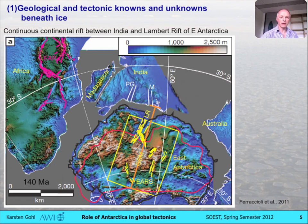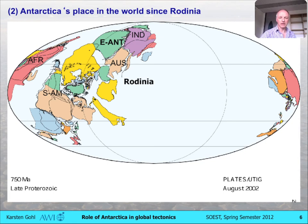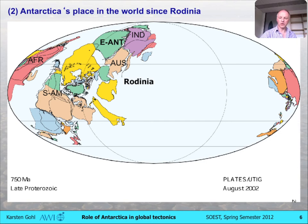Let's move back to where the East Antarctic continent actually came from. This is an old presentation by the PLATES project at the University of Texas in Austin, but it's quite a nice series of plate reconstructions, mostly from paleomagnetics. As you all know, there's a large uncertainty with the old paleomagnetic reconstructions, as only the paleolatitudes are relatively well constrained, but the longitudes not at all.